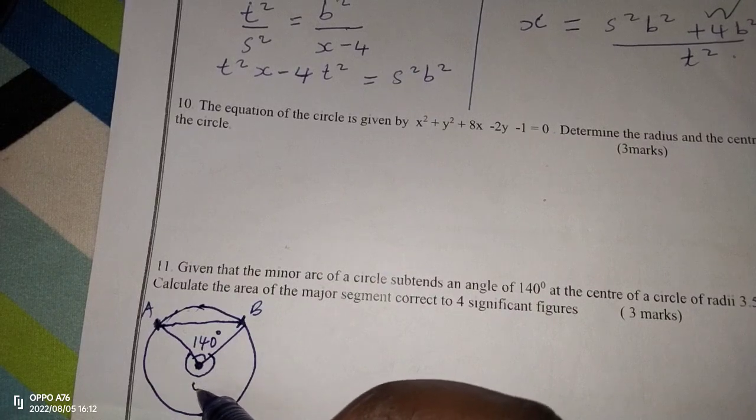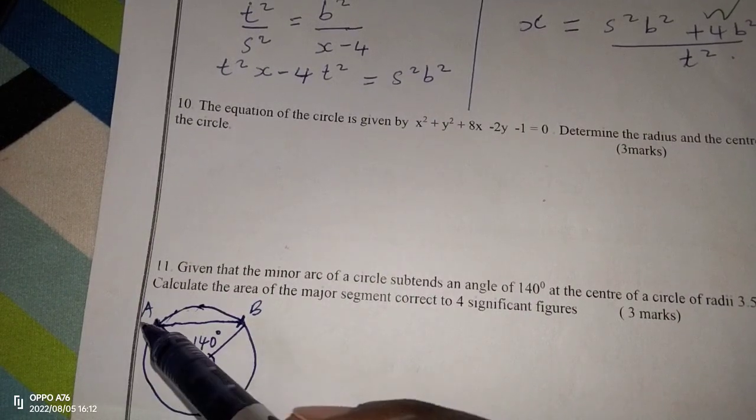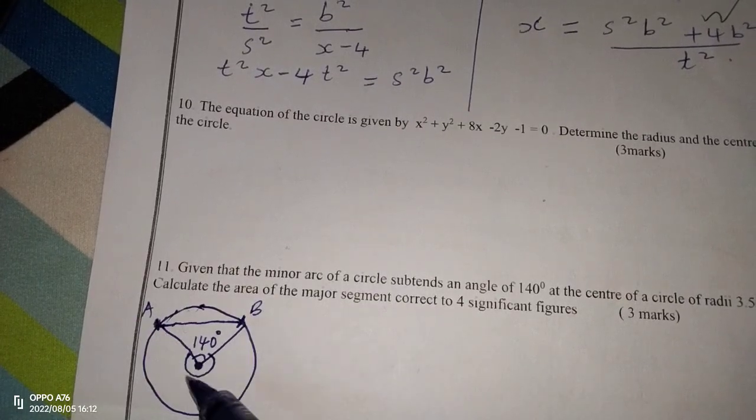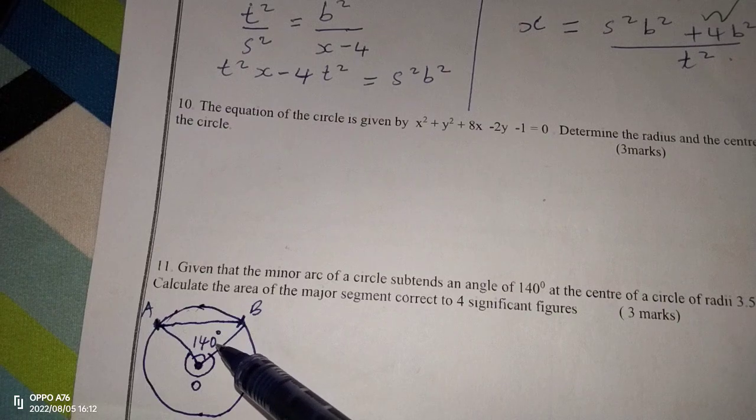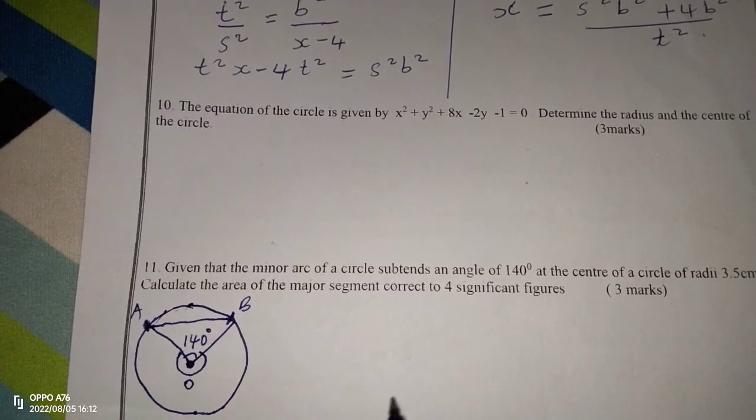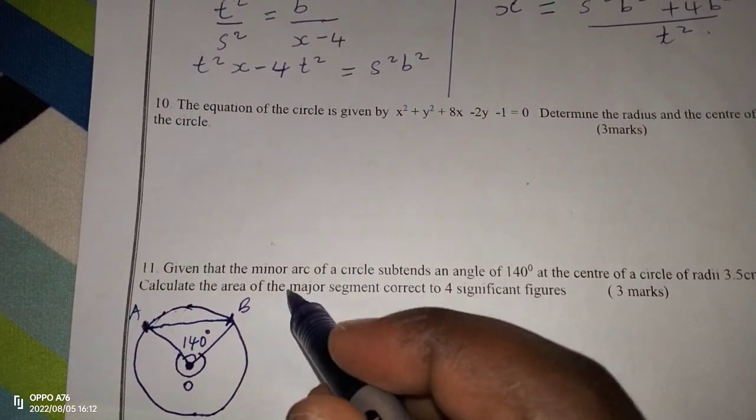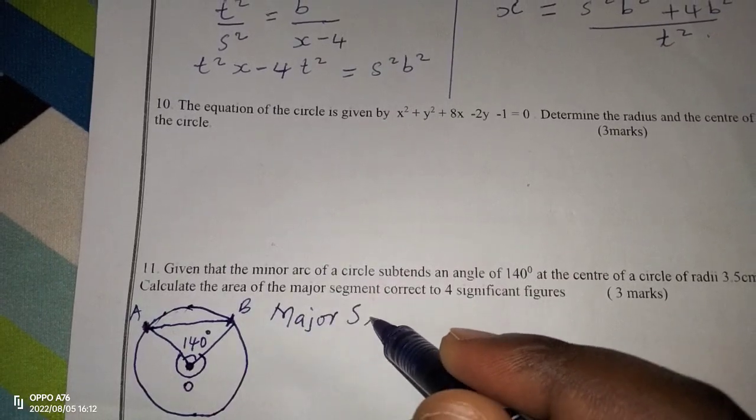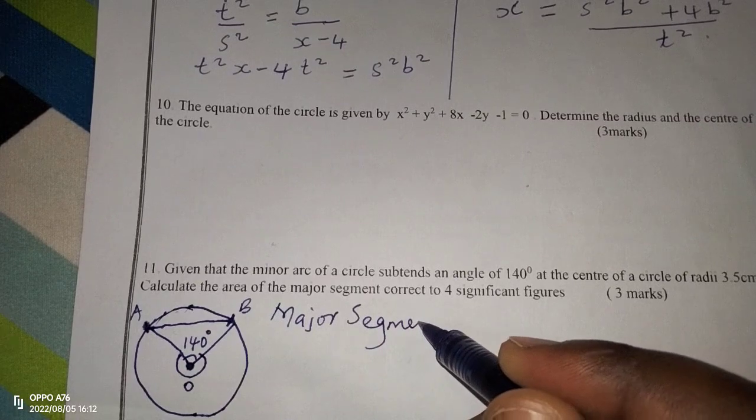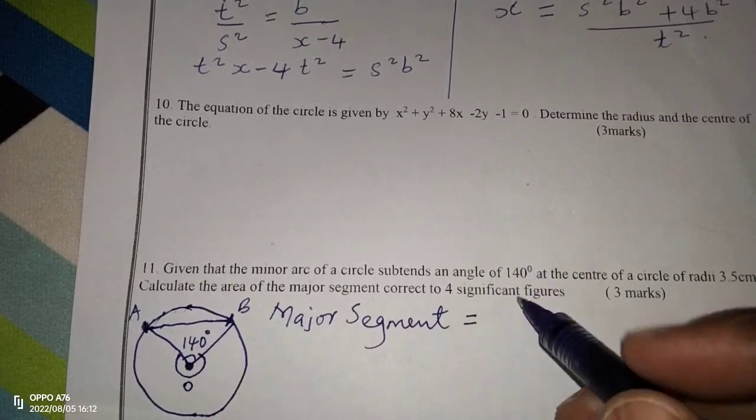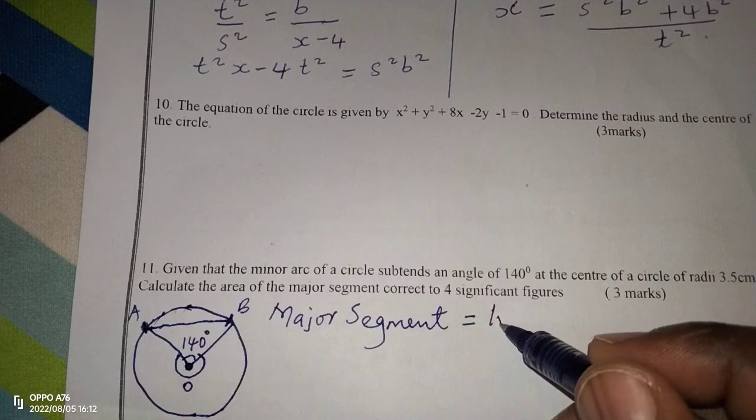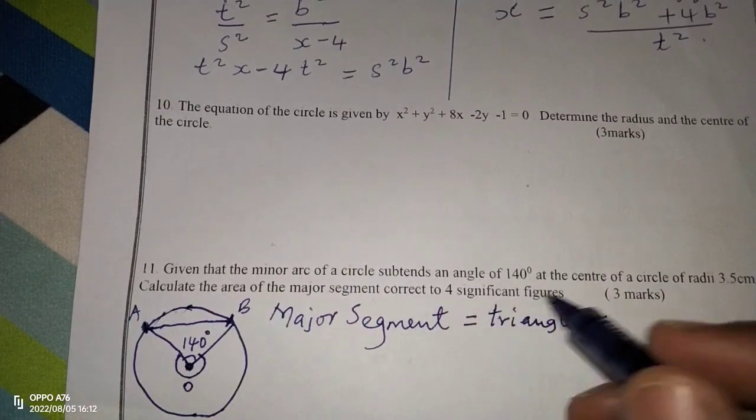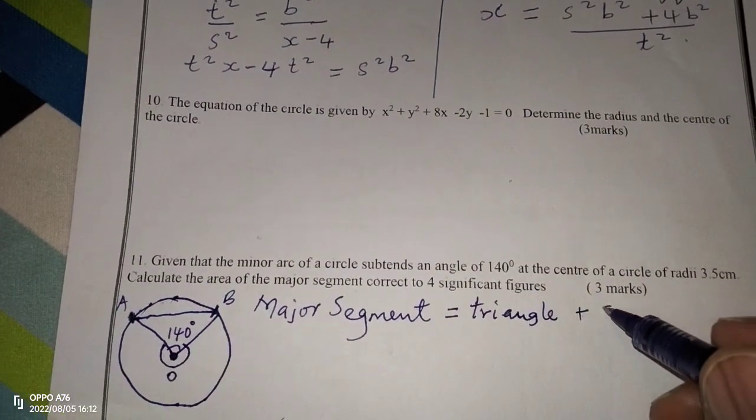Therefore, major segment is usually constituted by a major sector which is having this angle and a triangle. If this point is called O, then triangle AOB. So both the triangle and the major sector will be forming what we call the major segment. Therefore, the major segment will be equal to triangle plus sector.